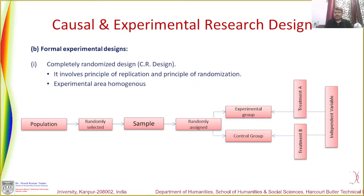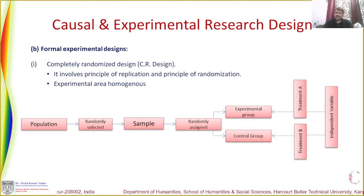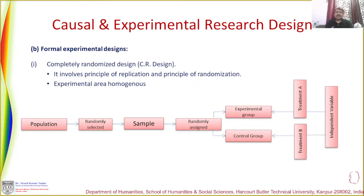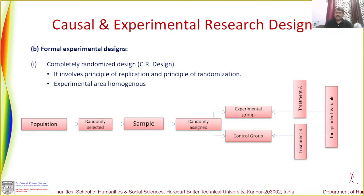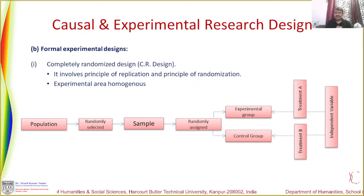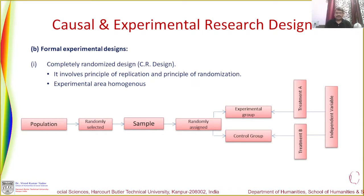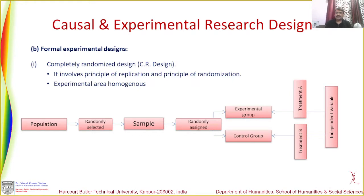We look at these issues in view of extraneous factors and always try to understand to what extent we can minimize them. When we talk about completely randomized design, this design involves two major principles: the principle of replication and the principle of randomization.